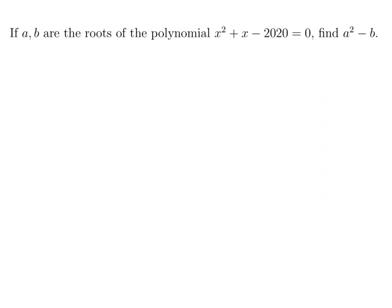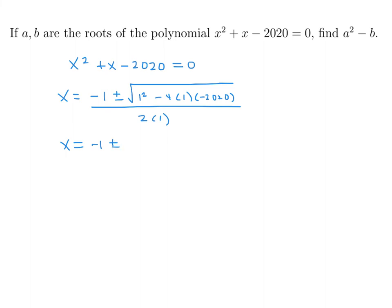If a and b are roots of the polynomial x squared plus x minus 2020 equals 0, find a squared minus b. I don't think this factors, so I think we have to use the quadratic formula. So x will be minus 1 plus or minus the square root of 1 squared minus 4 times 1 times negative 2020, all over 2 times 1. So x is minus 1 plus or minus 8081 under the square root sign, and that's all over 2.